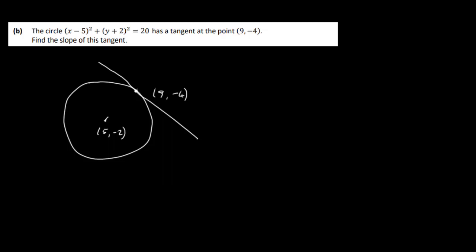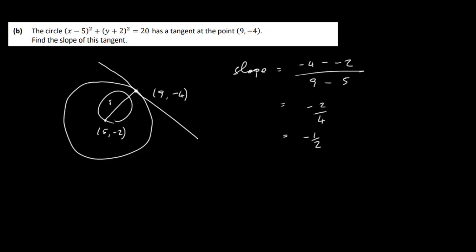The first way is to find the slope of the radius to that point. The slope is (y2 minus y1) over (x2 minus x1), so it's minus 4 minus minus 2, over 9 minus 5. That's minus 4 plus 2, which is minus 2, over 4 — so minus a half. The slope of the radius is minus a half, so the slope of the tangent is the negative reciprocal: 2.